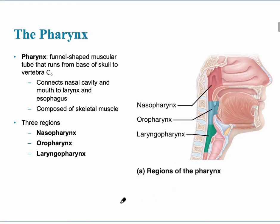Now on to the throat. This slide shows us the three regions of the pharynx. The pharynx travels from the base of the skull to about vertebra C6. The three regions are the nasopharynx, the oropharynx, and the laryngopharynx.